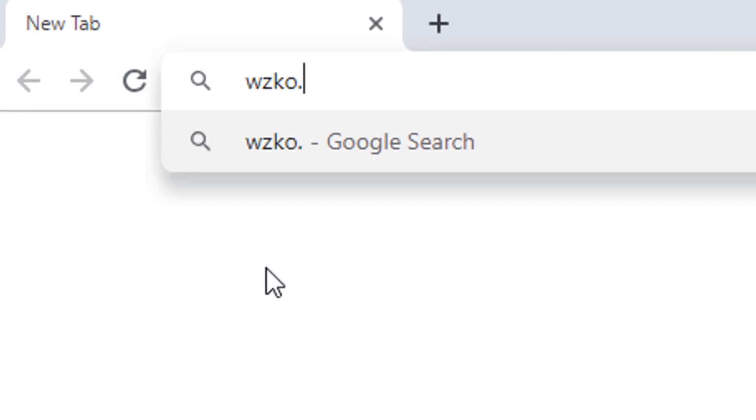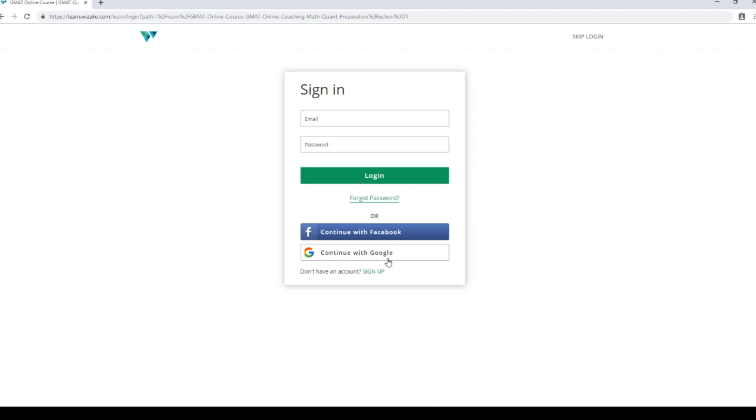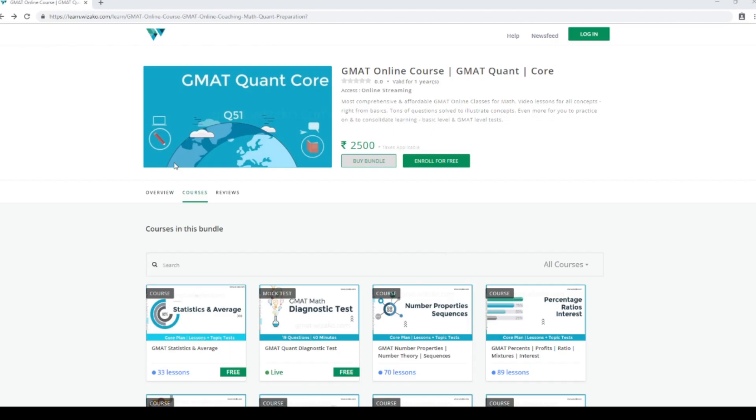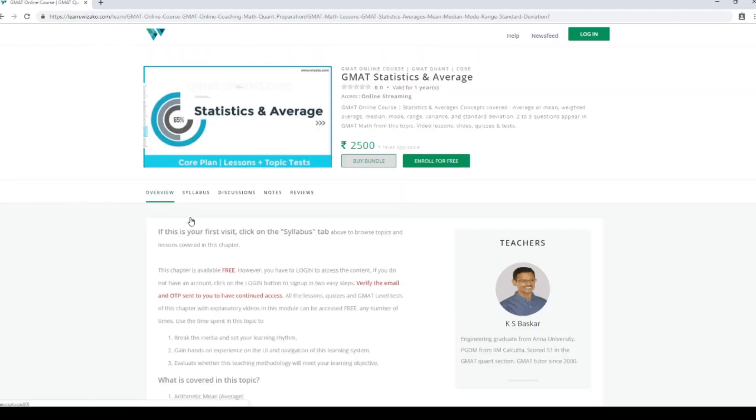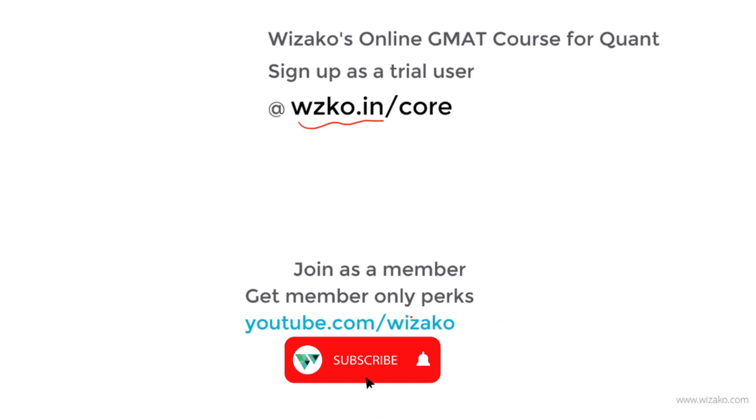Before you leave, two things. Sign up as a trial user at wzko.in slash core. One of the most comprehensive online GMAT course. Get started with a free topic, statistics and averages. Build momentum to your GMAT preparation. Subsequently, pay up and unlock the remaining topics. Lastly, subscribe to the channel youtube.com slash vizako and spread the word among your friends who are preparing for GMAT. You may also choose to join this channel as a member for a small monthly fee and enjoy member-only perks that will help you boost your GMAT preparation.